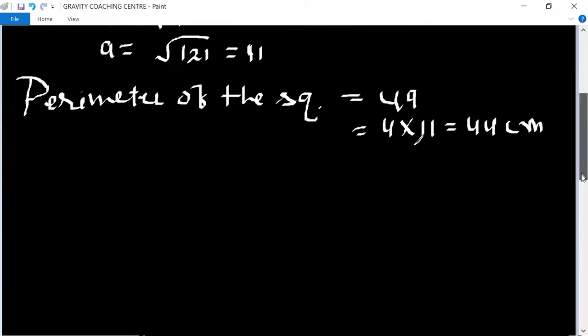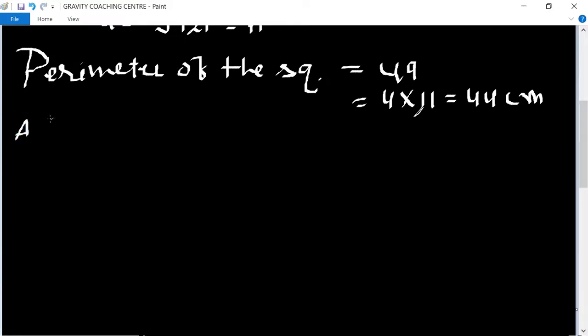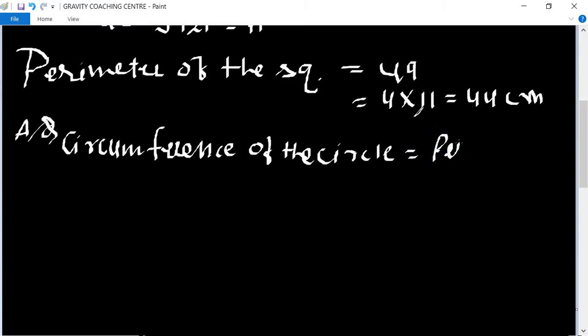According to the question, circumference of the circle equals perimeter of the square. We know that the formula of circumference equals 2πr, which equals 44.